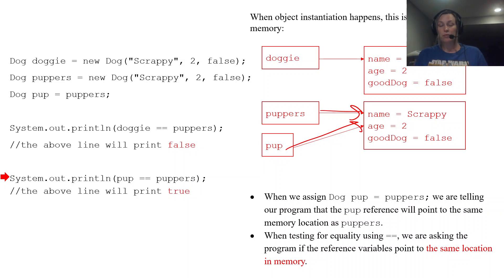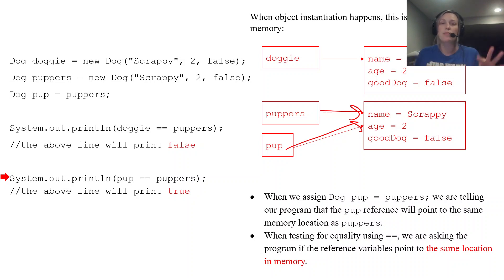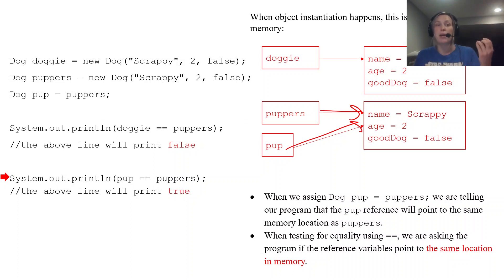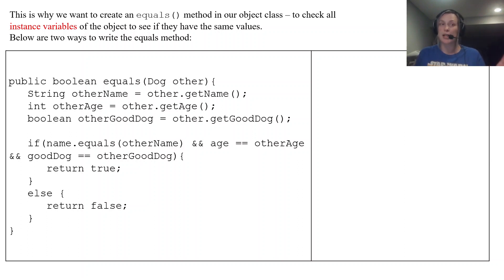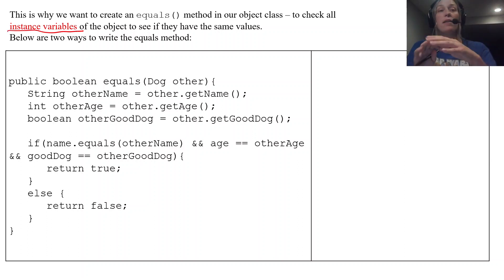You can see how we don't really care about locations in memory — that's not what we're after when we want to know if two objects are equivalent. We want to compare their actual data. To do that, we have to make a method in our object class to check all instance variables of each object to see if they have the same values.